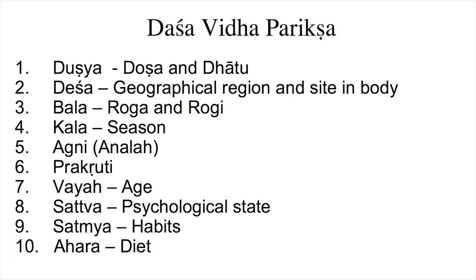In Dasavidha Pariksha, there are 10-fold aspects of examination. We're looking at not just internal health but also the environment as a whole and how that plays into a person's particular state of health. The 10 factors are: Dushya, Desha, Bala, Kala, Agni or Anala, Prakriti, Vaya, Sattva, Satmya, and Ahara. This reference is from Ashtangahridayam by Vagbhata, and the last part of that verse is Avastha — meaning the state. We're going to look at the state of each and every one of these factors.